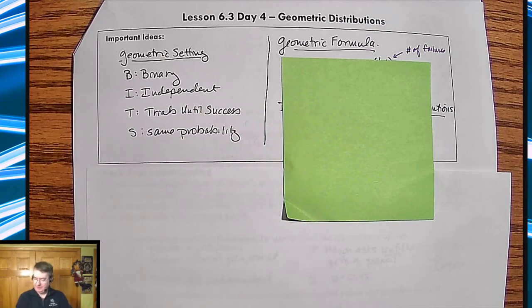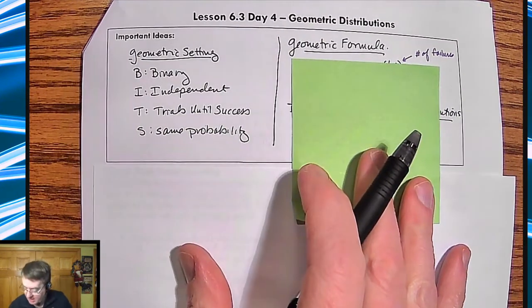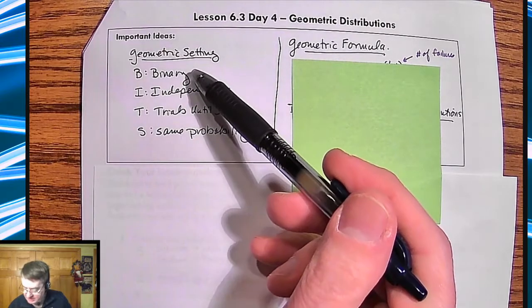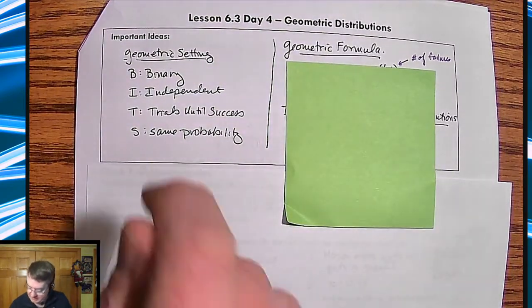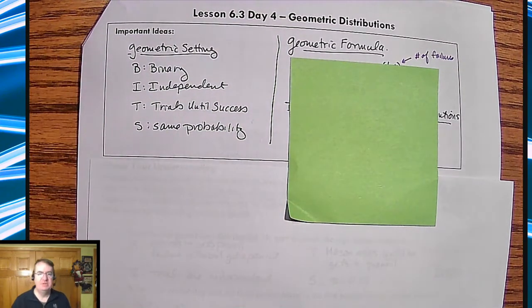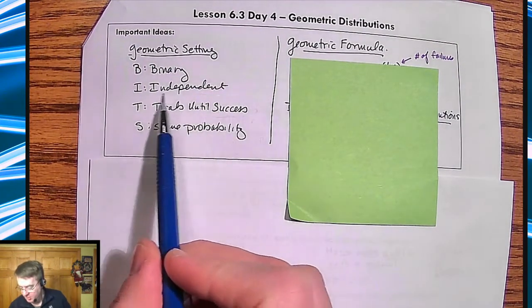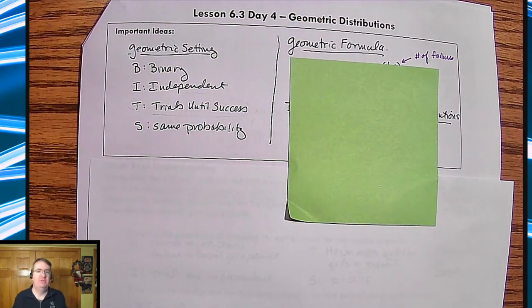The four parts of a geometric setting are very similar to the four parts of a binomial distribution. The only difference here is that while we do have binary, independence, and the probability stays the same, the difference is that trials until success is the different part. In the binomial one, you have a set number, like how many can you get out of 10? This one, you're going to go until you see a success.